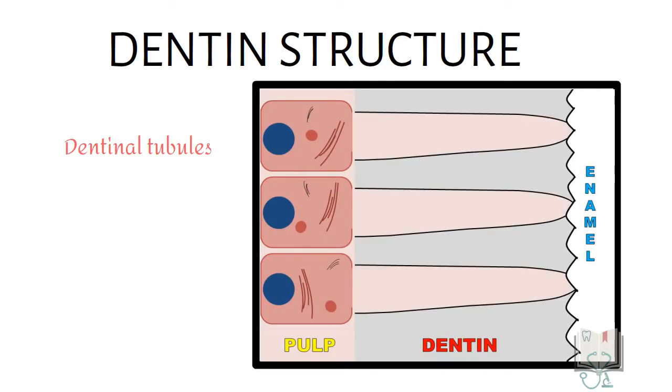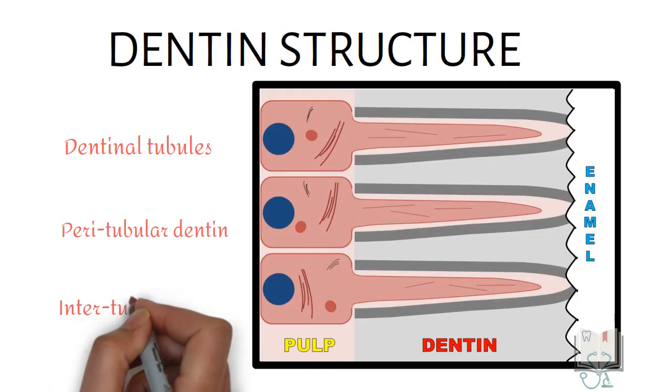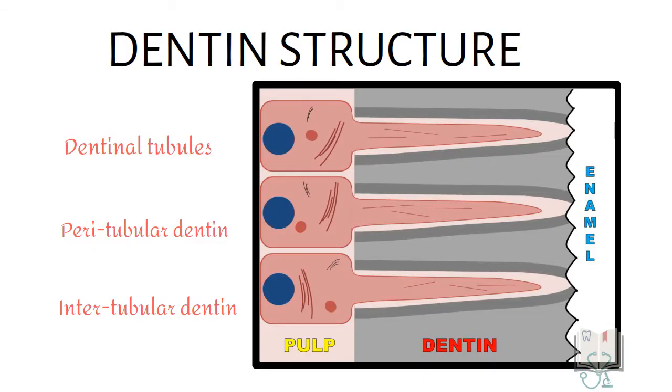Dentineal tubules which contains the odontoblastic processes. Peritubular dentine which makes the wall of the dentinal tubules and intertubular dentine which forms the bulk of dentine between the tubules.